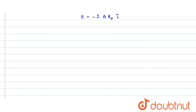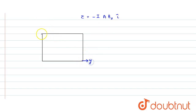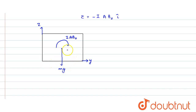Drawing the block in the YZ plane, with the y-axis and z-axis shown, the block is tilting due to the torque, which equals i·A·B₀. The weight mg passes through the center. Due to this torque the block tilts from horizontal to some angle theta. As a result, the normal reaction no longer passes through the center but shifts by a distance x.